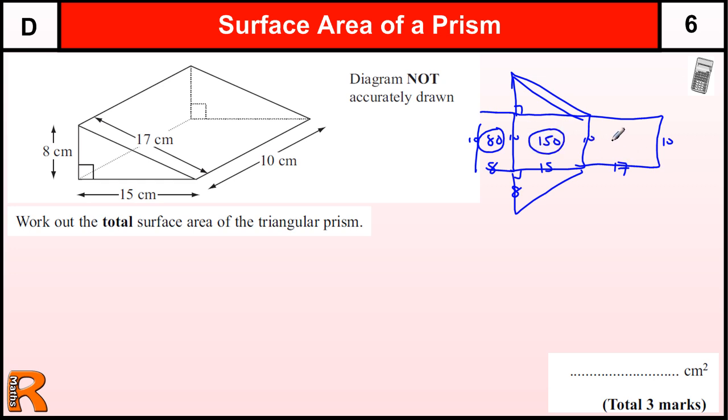This rectangle is 17 by 10 which is 170. These two triangles - remembering for a triangle we do the base times the height divided by 2. We could realize that these both together would make one rectangle that's 15 by 8, but if we didn't do that, we can do the triangle: 15 times 8 divided by 2. Half of 8 is 4, 4 times 15 is 60, so that triangle is 60.